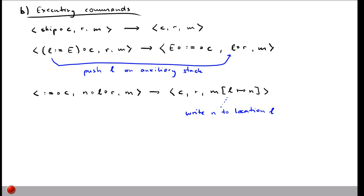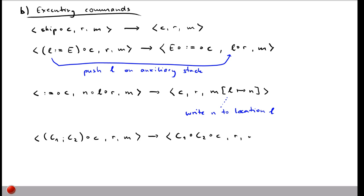Now let's look at the chaining command using semicolons to combine multiple commands. If a chain C1 ; C2 is on top of our control stack, we decompose it by putting C1 first, then C2, then whatever else was on the stack before — executing them one by one.